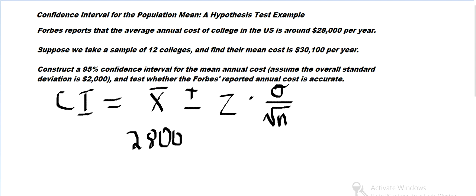So $28,000 plus or minus, we're going to need the Z value for the 95% confidence interval, then times the standard deviation is 2,000 over square root of 12. And we just need to find that Z value.